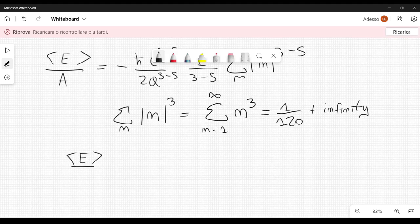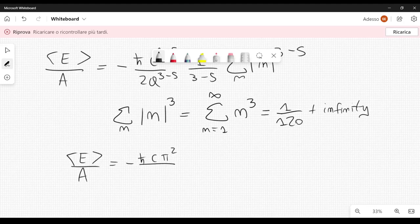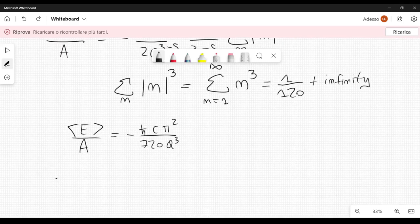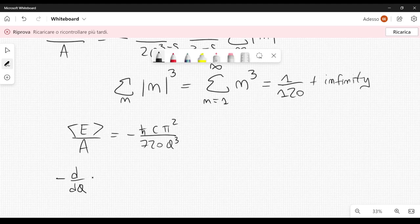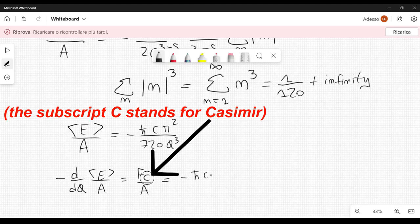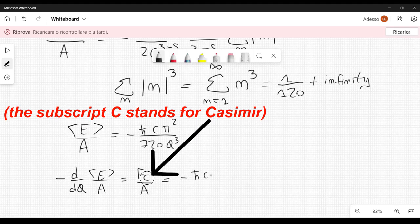Now, we can also find a force between the two plates. So, this is the energy that we found. Now, if we take minus the derivative with respect to a, the distance between the two plates of e over a, this will give us the force, fc over a. So, I have a minus sign here, and the result is minus h bar c pi squared divided by 240 a to the fourth power.